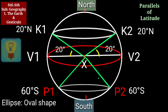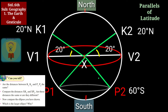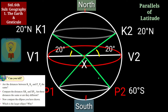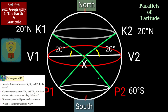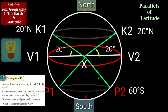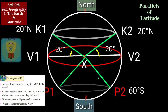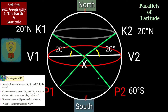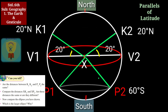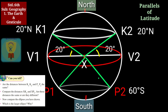Have you done it, students? Now give the answers to the following questions. Are the distances between K1-K2 and P1-P2 the same? See the distances, students — K1-K2 and P1-P2. No, the distance is not the same. Now compare the distances X-K1 and X-P2. Are these distances the same or different? Yes, they are the same. Now compare the ellipses you have drawn — both ellipses are parallel to one another.